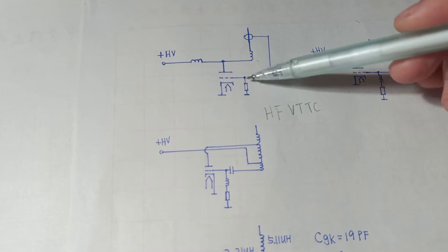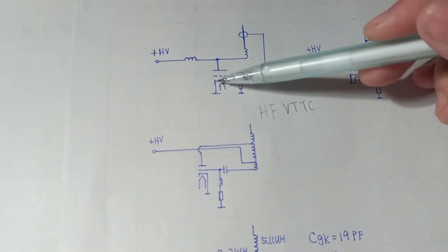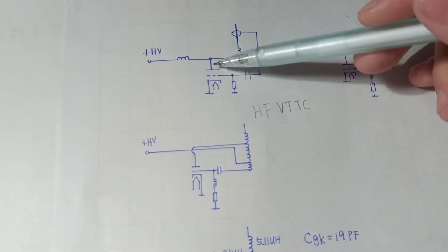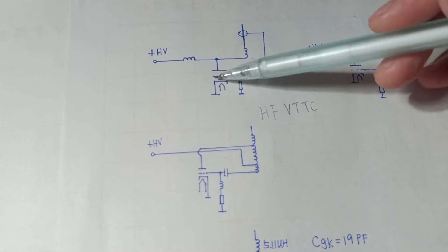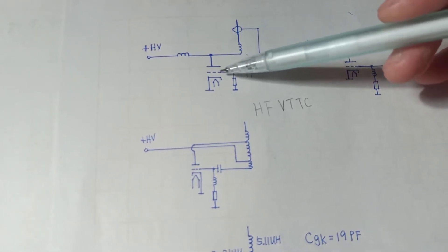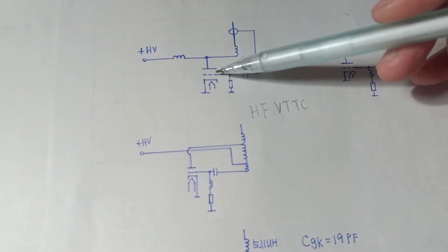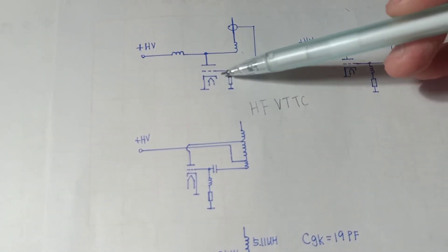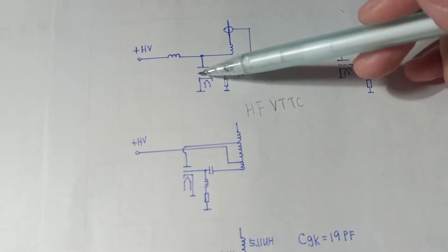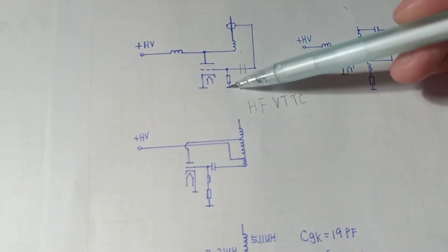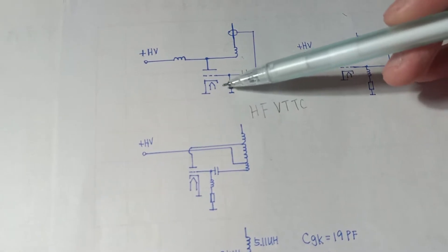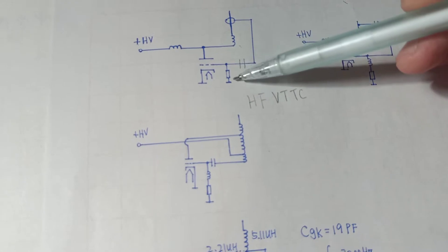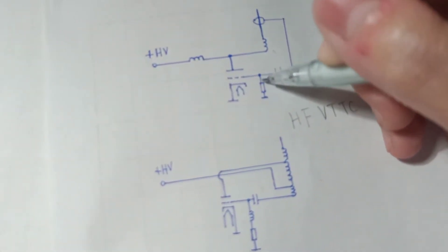This one functions like this: some electrons will fly over here from the cathode to the anode, but some of them will land on this grid. So if you don't have this resistor, the negative voltage will build up and finally the tube will be cut off. If you have this resistor here, the electrons go clockwise.